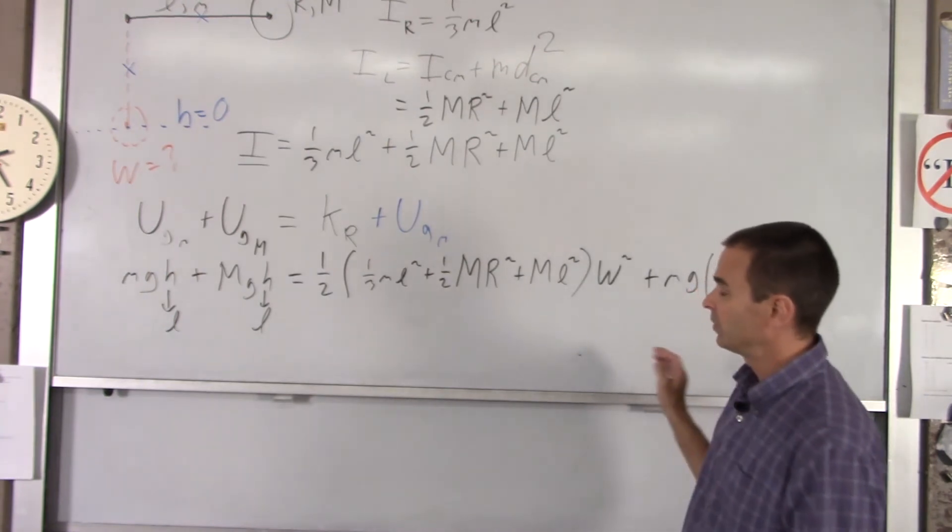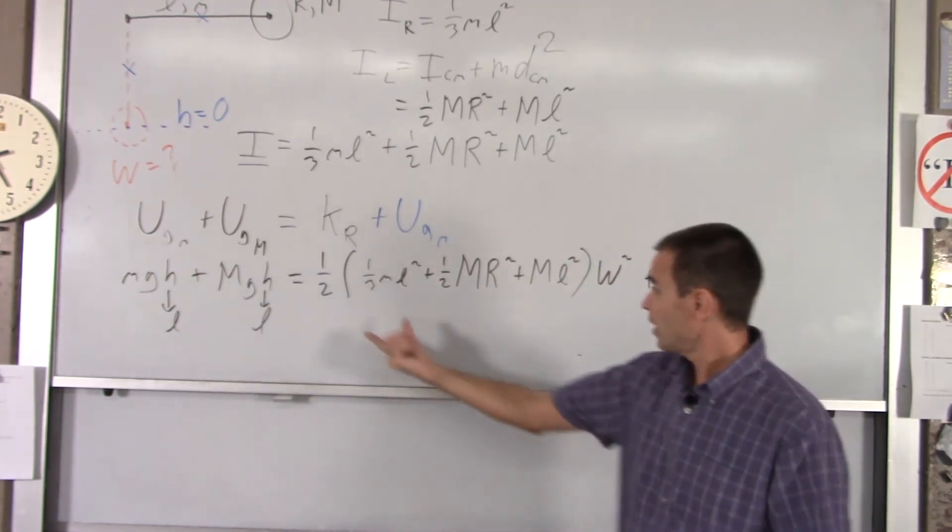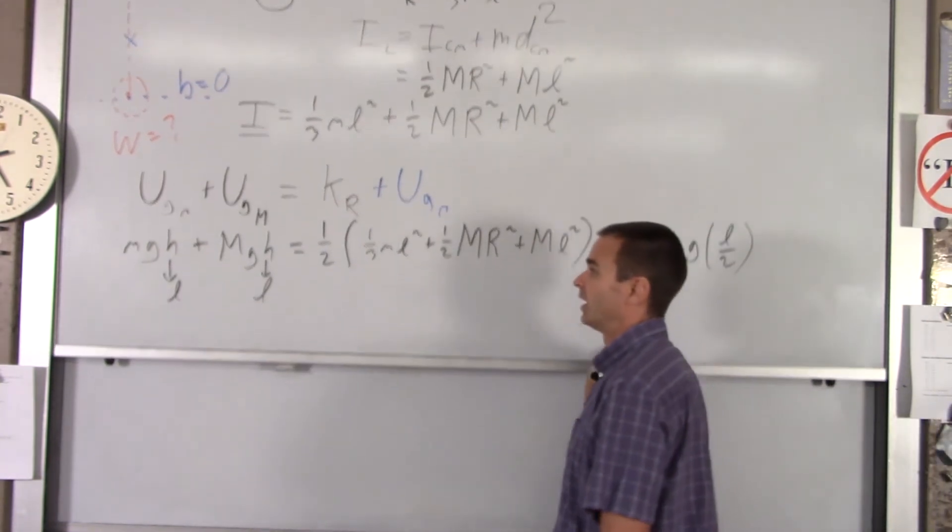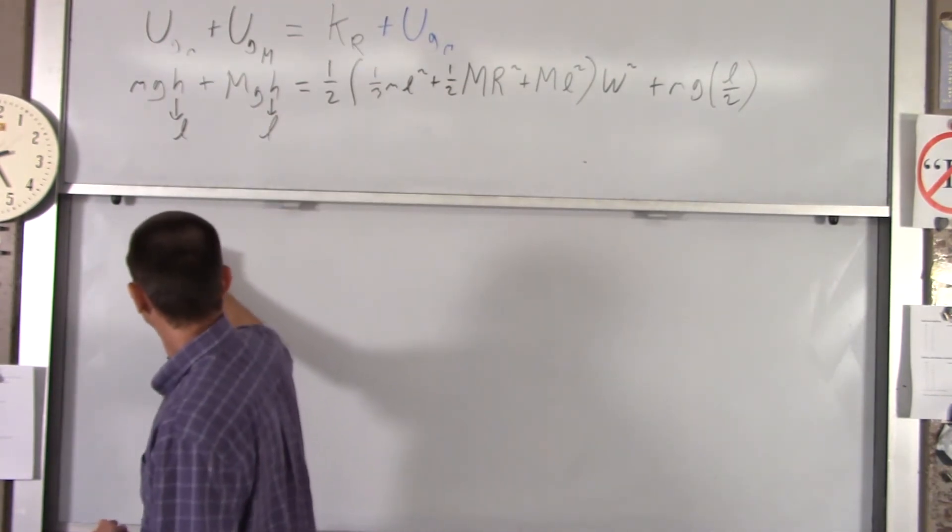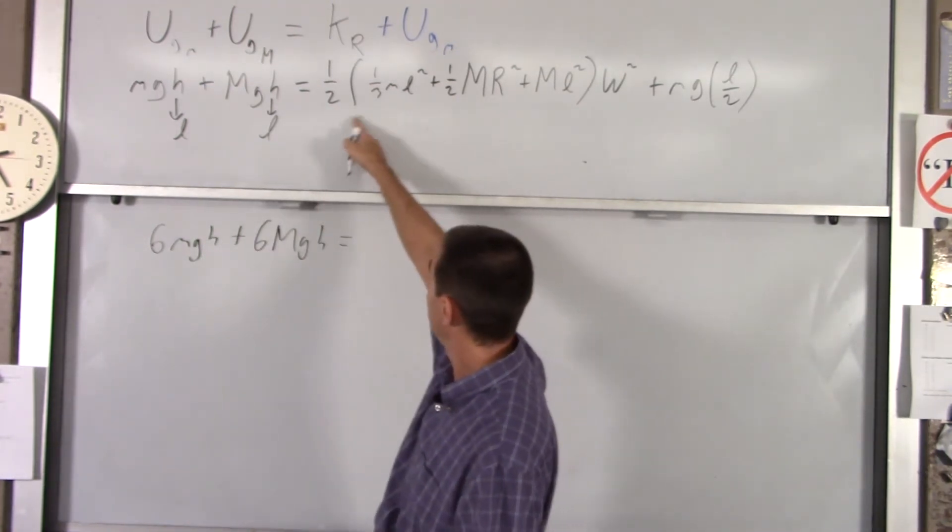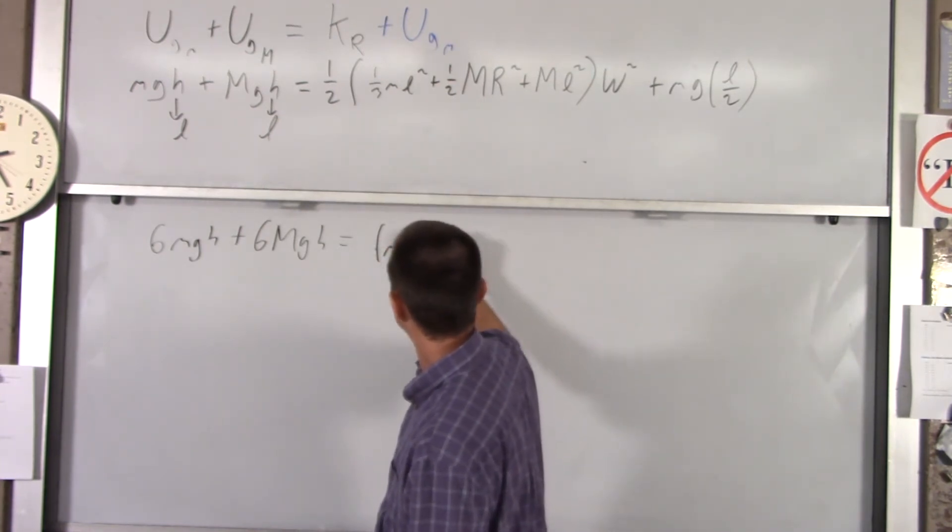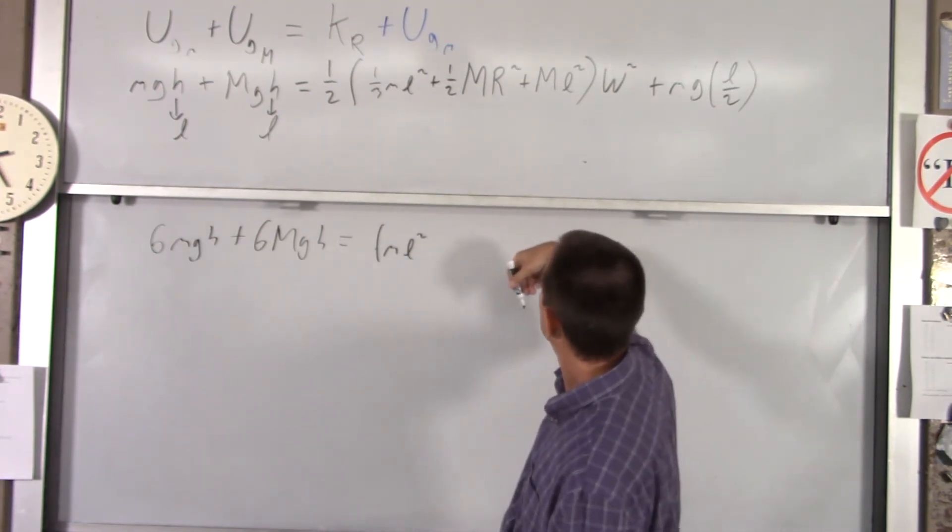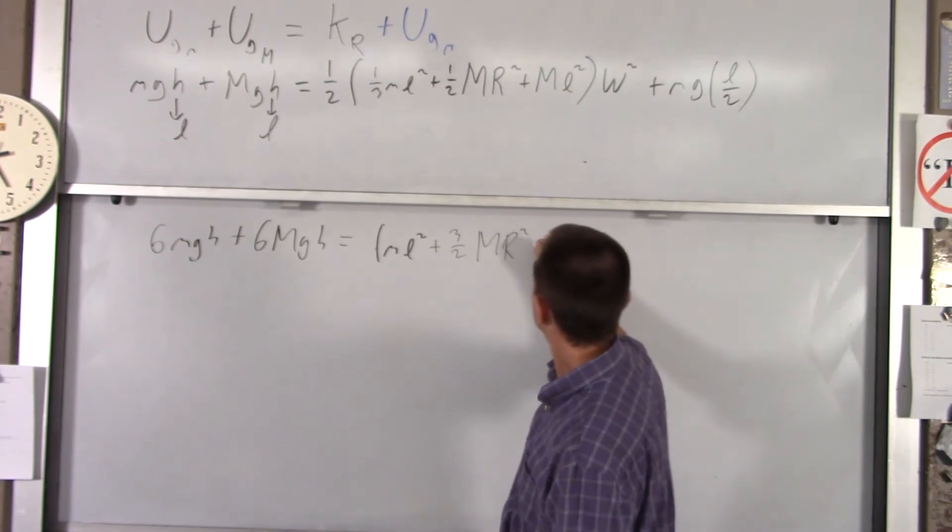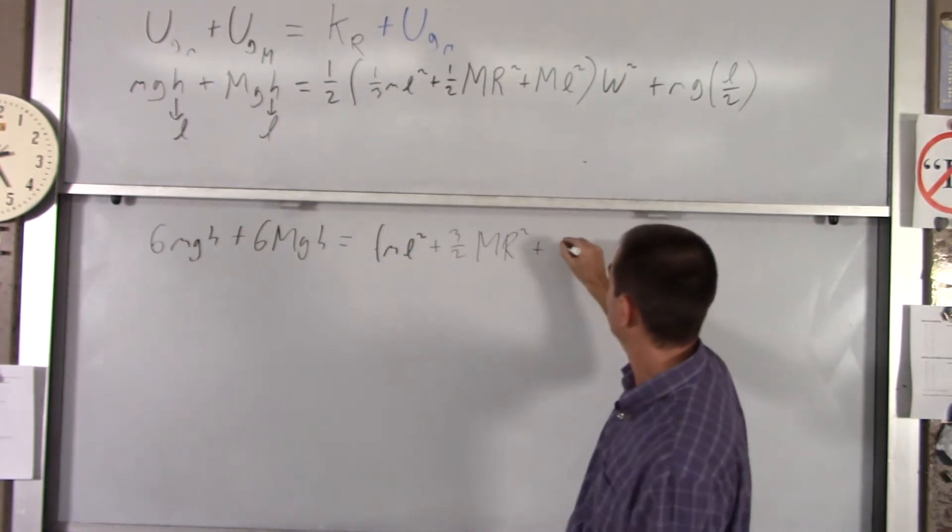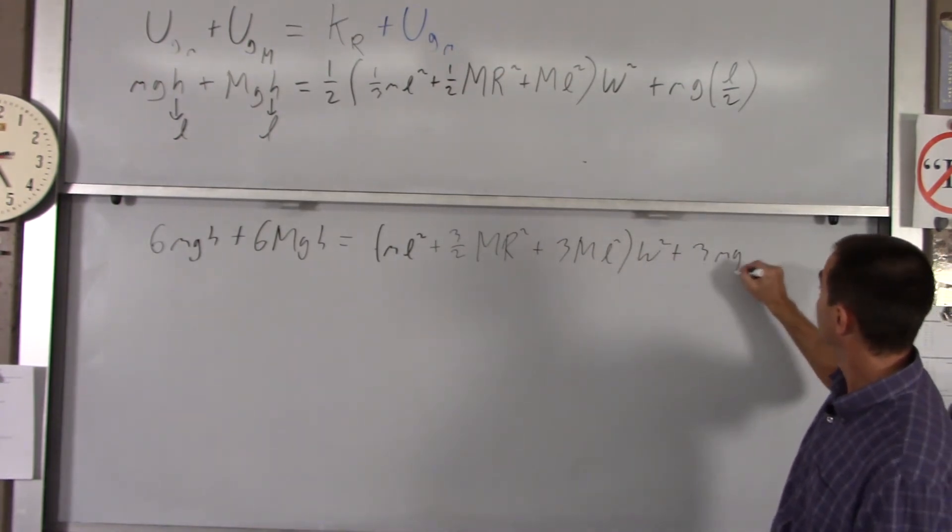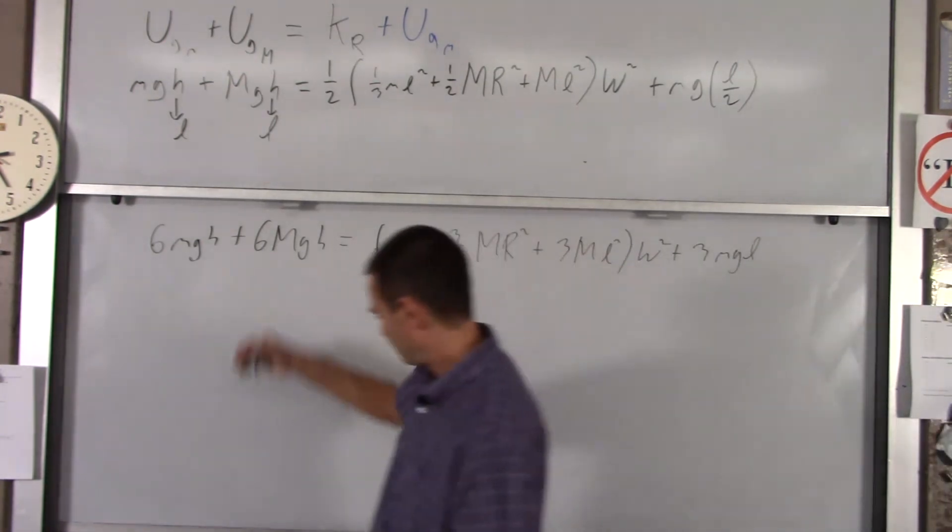All we're going to do now is do a little algebra and solve for omega. Our smallest fraction is one-sixth, so I'm just going to multiply everything by six. So these become 6mgh plus 6Mgh equals - distributing the half in here, that becomes a sixth, multiplying it by six just becomes mL squared. That is a quarter times six - oh darn, that's three halves. And then this becomes three ML squared times omega squared. And then our last term would be three little mgL. Oh, and these h's are L's.